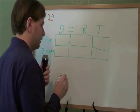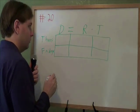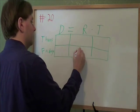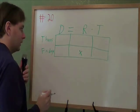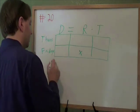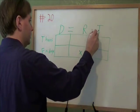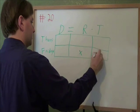And then we need to start filling this in. So what are we looking for? We're looking for the rate on Friday. So we'll put an x in this box. X is what I'm looking for. And then what do we know? We know that on Friday, we spent 4 hours working on the problems.